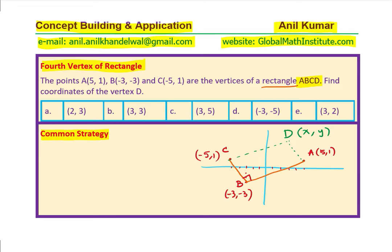But let us see, how do we find exact coordinates of point D? To find the coordinates of point D, since it is a rectangle, we know BC is parallel to AD, so we can find these slopes and equate them. That will give us one equation. The other one, we can equate CD, which is parallel to AB. We definitely need to find the slopes. Let us calculate the slopes.